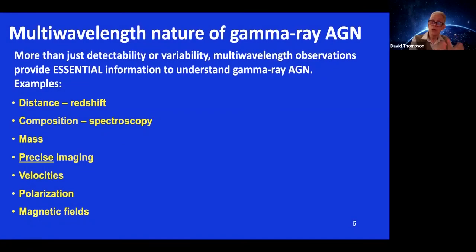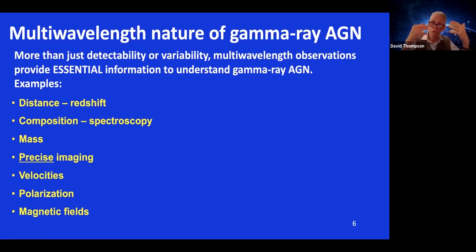We don't even know a gamma-ray source is an AGN without multi-wavelength observations. Multi-wavelength observations are absolutely critical to understanding this very important topic in gamma-ray astrophysics.